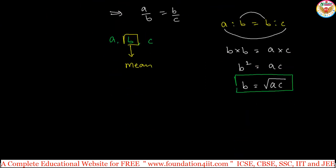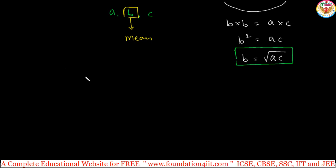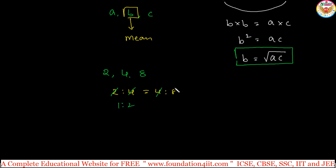Let us see one example. For the numbers 2, 4, 8 — first let us check if they are in continued proportion. 2 is to 4 should equal 4 is to 8. Simplifying: 2 is to 4 gives 1 is to 2, and 4 is to 8 gives 1 is to 2. They are equal, so 2, 4, 8 are in continued proportion.